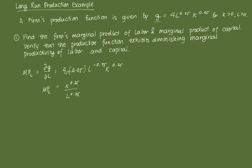Similarly, marginal product of capital is the derivative of Q with respect to K. This equals 4 times 0.25 times L raised to 0.25 times K raised to negative 0.75. We're left with MPK equal to L raised to 0.25 over K raised to 0.75. Those are our marginal product of labor and capital functions.